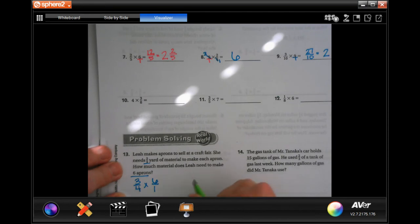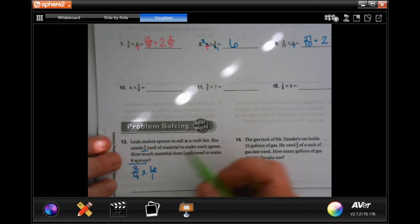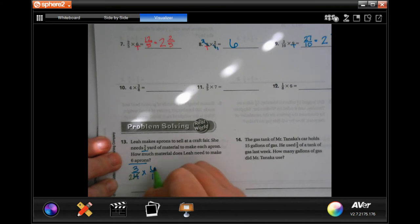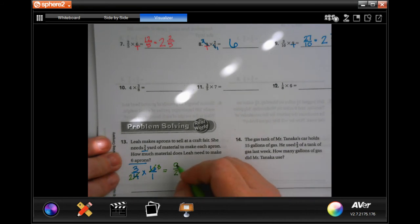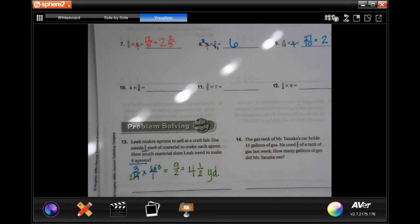Now, here is going to be a tricky part they did not tell you about. 4 doesn't go into 6, and 6 doesn't go into 4, but 2 goes into both of them. So, 2 goes into 4, 2 times, and 2 goes into 6, 3 times. So, now when we multiply, we get 9 over 2. Well, 2 goes into 9, 4 times, because 4 times 2 is 8. 9 minus 8 is 1, and our denominator stays the same, and that's in yards. Not so bad, guys.